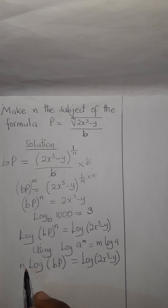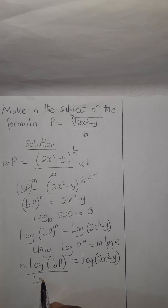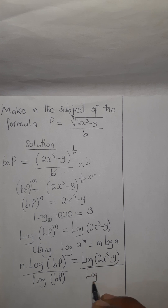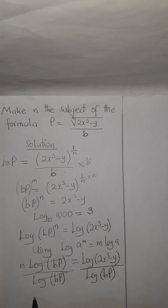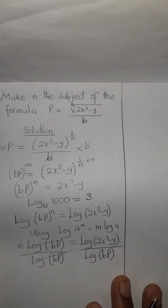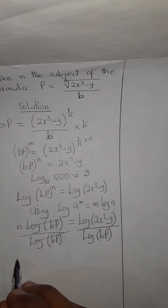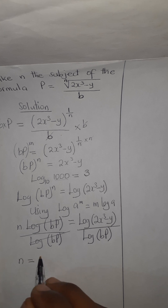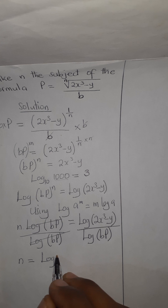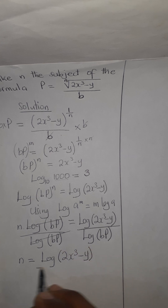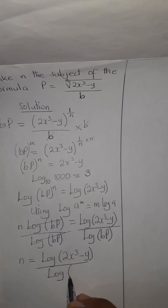Now, between N and log bp there is multiplication. To separate N and log bp, we have to divide both sides by log bracket bp. This one cancels this. Therefore, we have got N is equal to log bracket 2x cubic minus y, over log bracket bp.